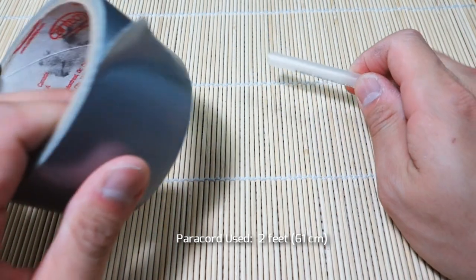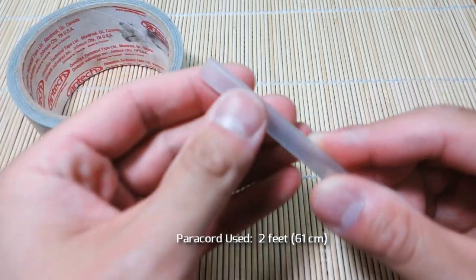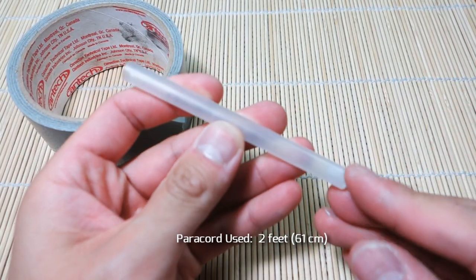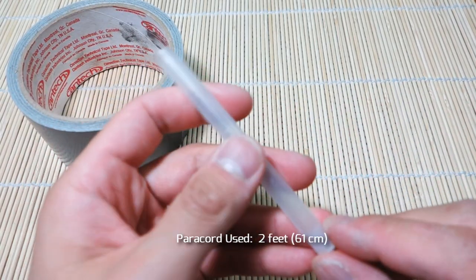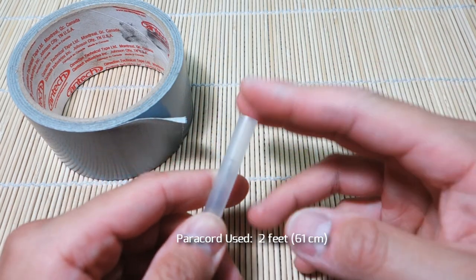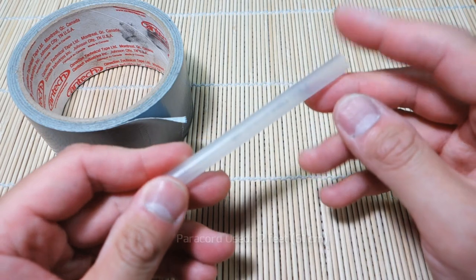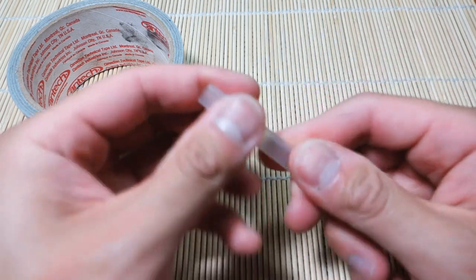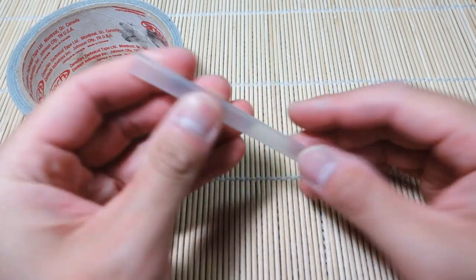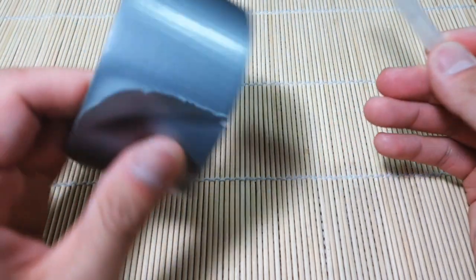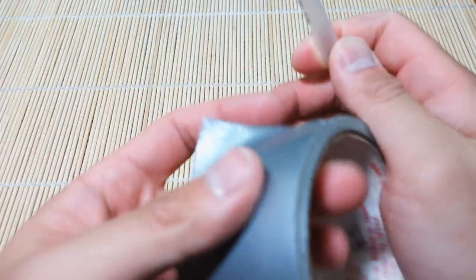What we're gonna be working with first is the body of a cheap pen. I just took one of those cheap Bic pens, took a pair of pliers and pulled off the tip as well as the ink refill. So we're just left with the hollow part of the body, and then we've got our duct tape. Okay, so what we're gonna do...